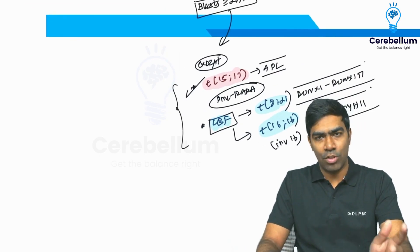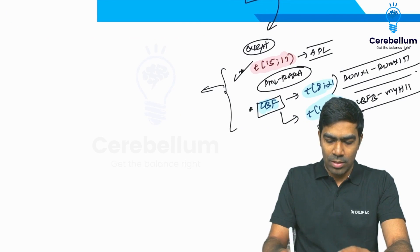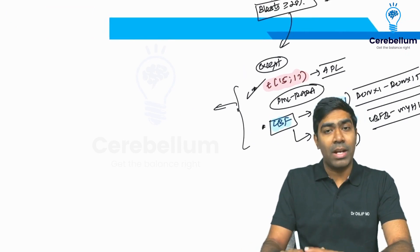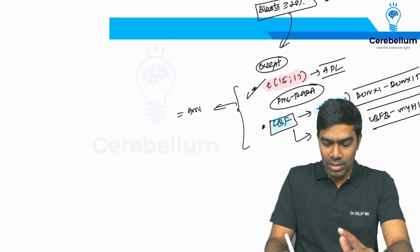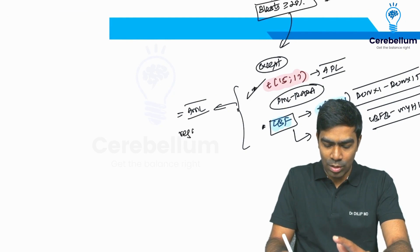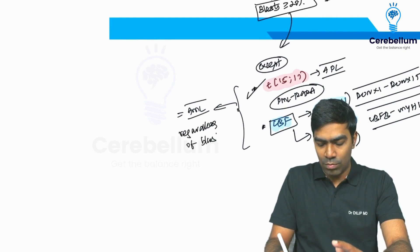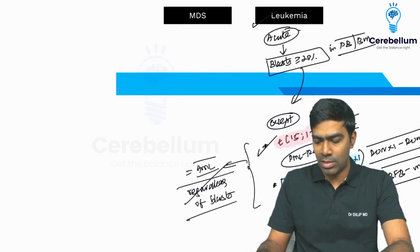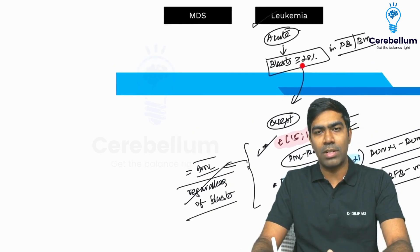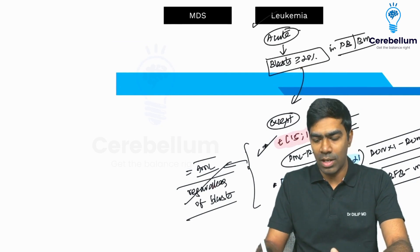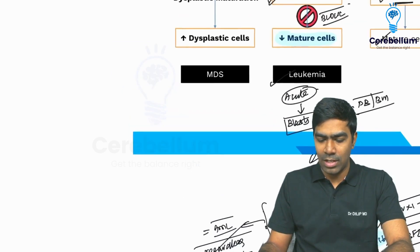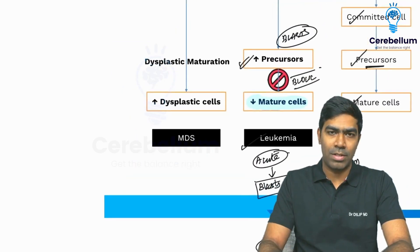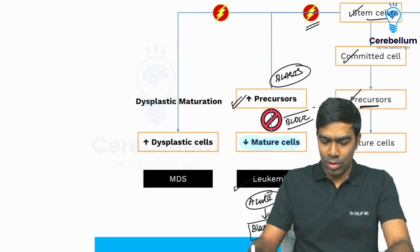These two cytogenetic abnormalities are examples of core binding factor leukemias. If you have any one of these cytogenetic abnormalities, you can make a diagnosis of acute myeloid leukemia (AML), regardless of the blast count — regardless of the amount of blasts in the peripheral blood or bone marrow. Even if the blast count is less than 20%, it doesn't matter; you can diagnose AML if any one of these three cytogenetic abnormalities is present.